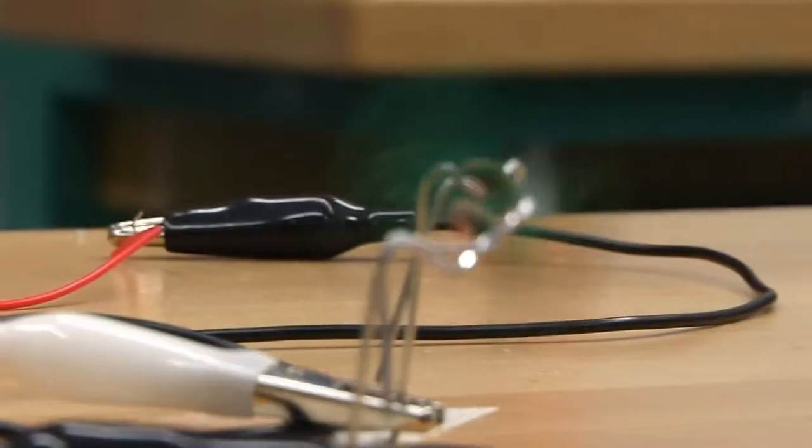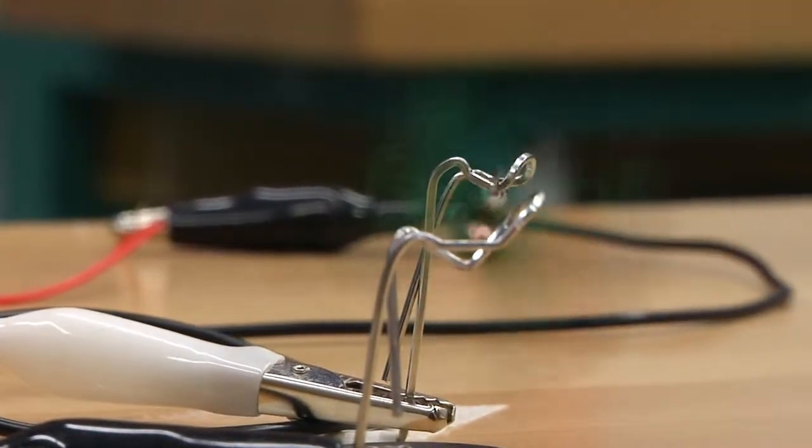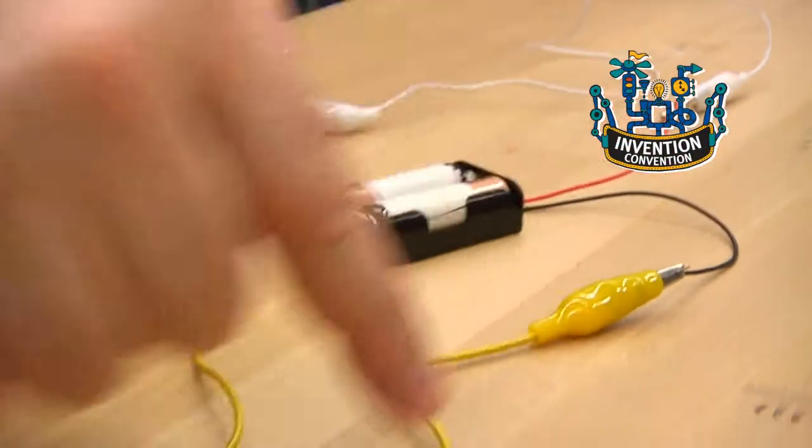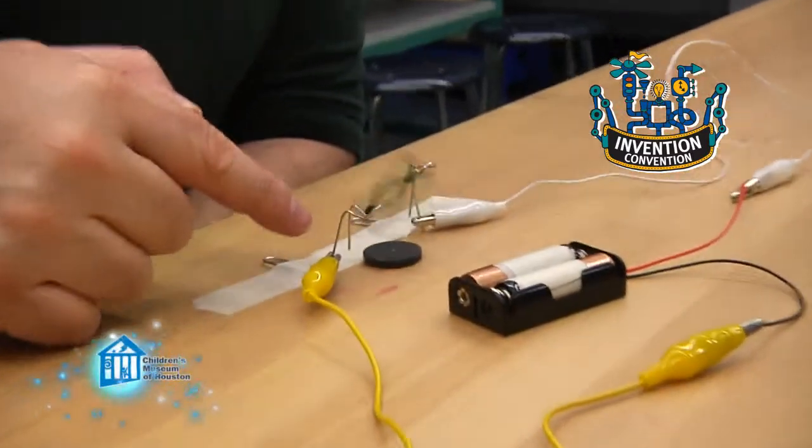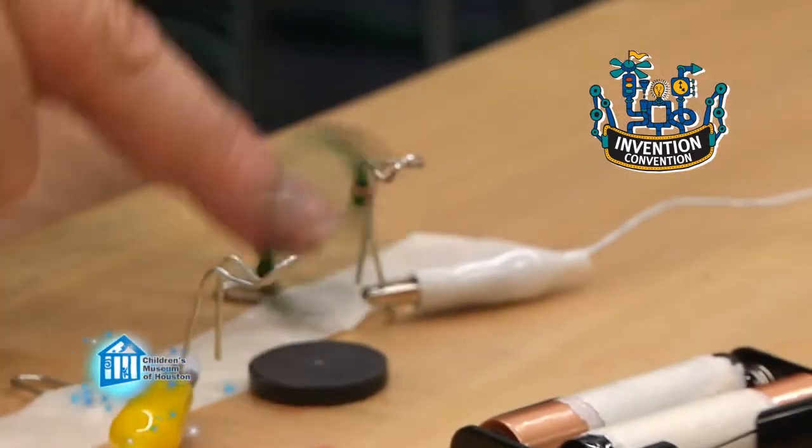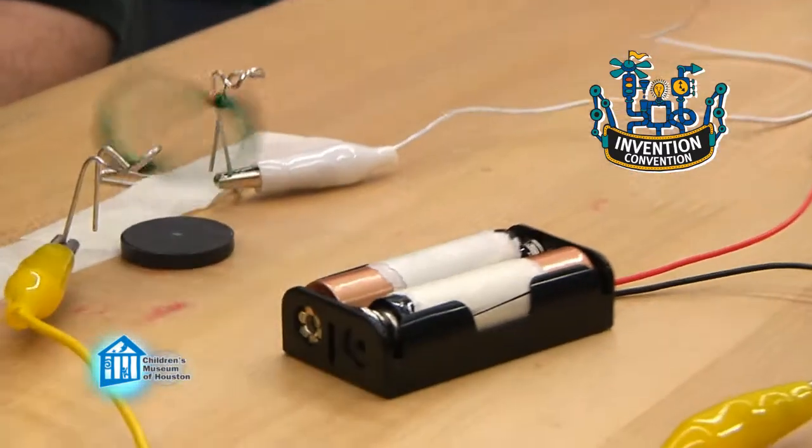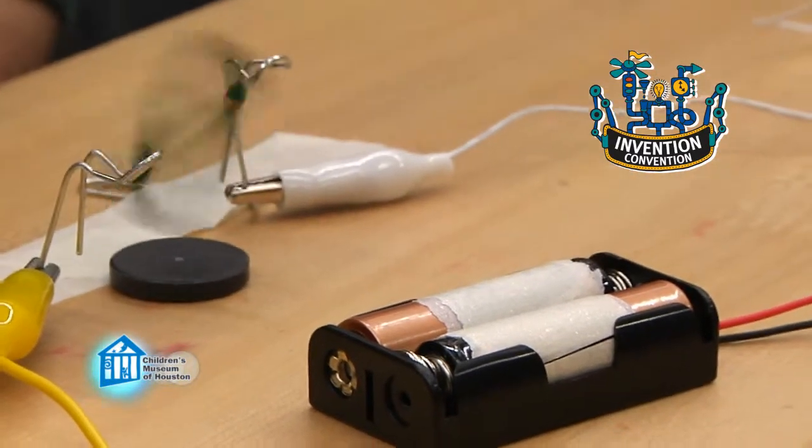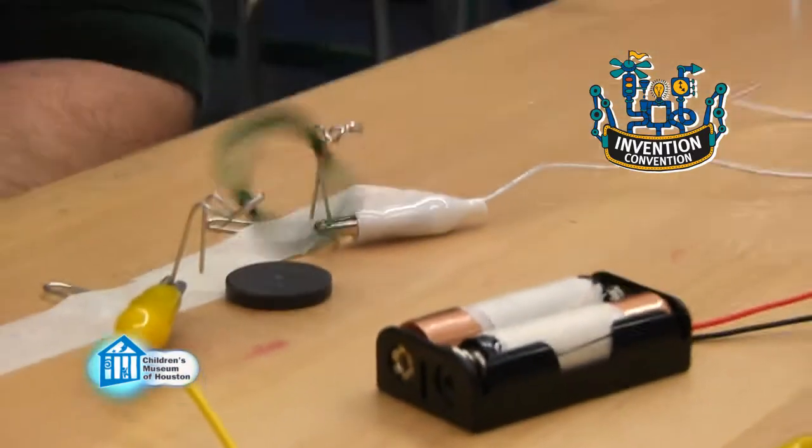So this is a very basic model of an electric motor. The electricity produced by the batteries runs through the wire, up the paper clip, through our coil, then back down the paper clip and opposite wire to the battery, completing the circuit. When electricity flows through the coil, it creates a magnetic field that attracts it to the magnet.